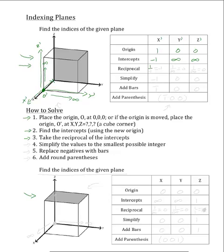Now we will take the reciprocals of these numbers. One over the x' intercept, which is negative one, equals negative one. One over the y' intercept, which is infinity, equals zero. And one over the z' intercept, which is also infinity, equals zero as well. The next step is to simplify these numbers to the smallest possible integer values. As you can see, negative one, zero, and zero are already at their smallest possible integer values, so we can leave them the same.